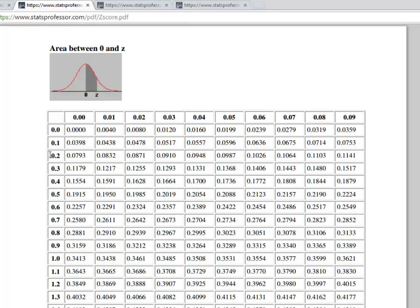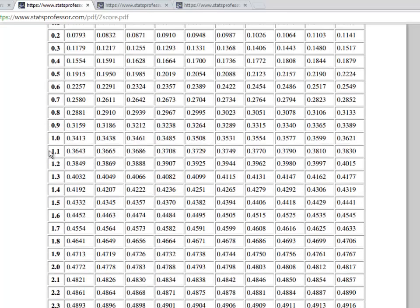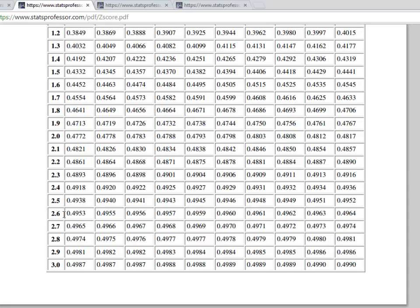Alright, so we're at the z-chart. We're going to go down until we see 2.6, and then we'll move over to where it says 1. So here's our 2.6. That's 2.60, and this will be 2.61. So the answer is 0.4955.